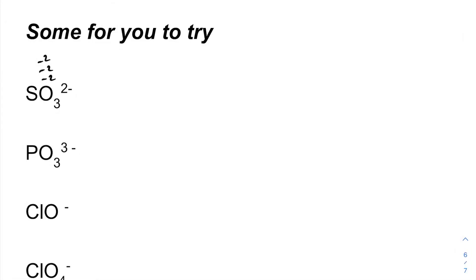So just to finish, some for you to try. Just pause the video and then play on when you're ready for the answers. We've got three oxygens minus two each. So that's minus six from those three oxygens. But we need to be left with this charge of two minus. So the sulfur must be plus four. So this is the sulfate(IV) ion.